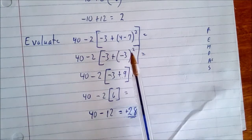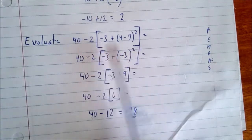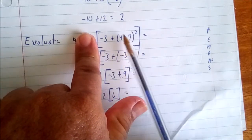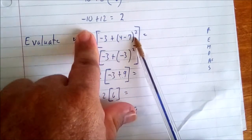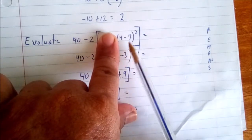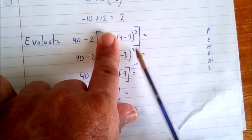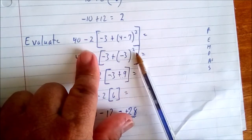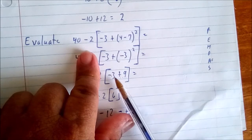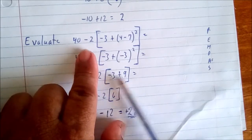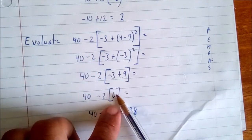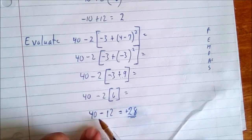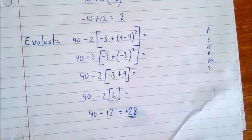To summarize: we worked whatever was in the innermost parenthesis — 4 take away 7 equals negative 3. Negative 3 squared gives positive 9. Negative 3 plus 9 gives positive 6. Then 2 times 6 equals 12. Bring on the negative and the 40. 40 take away 12 gives positive 28 as our solution.